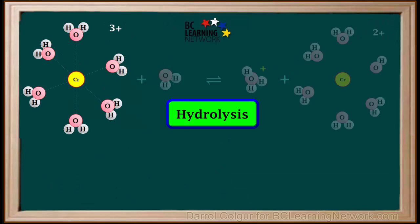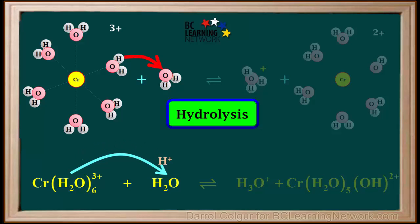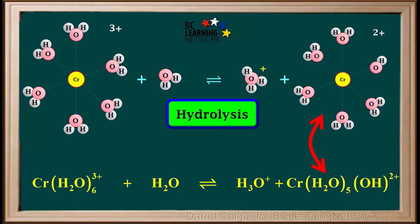So we can now write an equation which summarizes this process of hydrolysis. We write Cr(H2O)6 3+ + water gives H3O+ + Cr(H2O)5(OH) 2+. In the equations in this video, we'll leave out the subscripts AQ and L for simplicity. Remember, the main thing that happens here is one proton from the hexaquochromium ion is transferred to a water molecule, forming a hydronium ion and the conjugate base of the hexaquochromium ion.